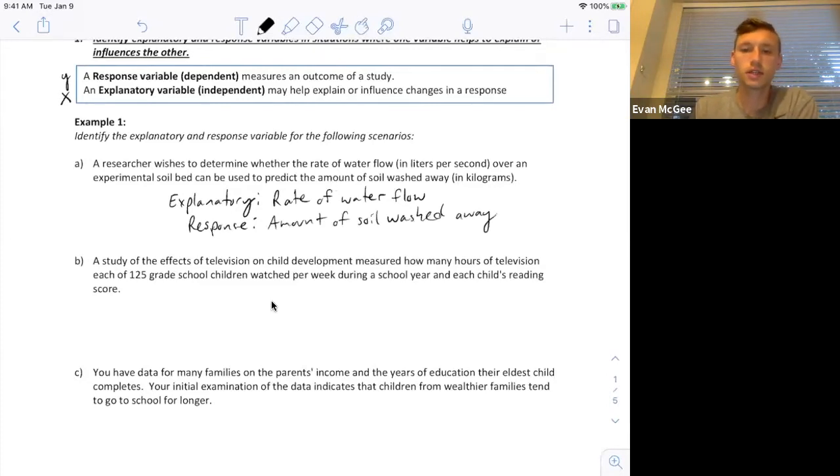Let's take a look at the second example. A study of the effects of television on child development measured how many hours of television each of 125 grade school children watched per week during a school year and each child's reading score.